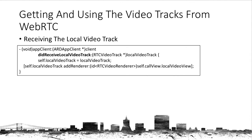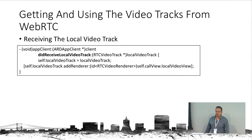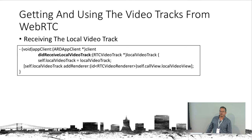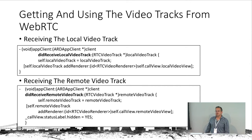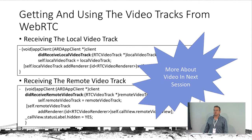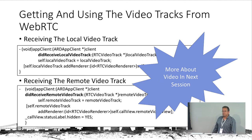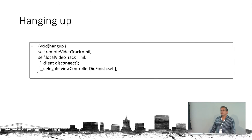In code, did receive local video track is where we attach the local view to the camera video track, and did receive remote video track is where we attach the view to the remote video track. For hanging up, we call the client's disconnect function and clean up the code.